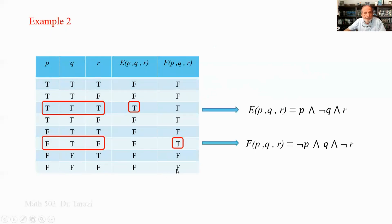Here is another example. I have a logical function F of P, Q, and R whose values are all false except for one true. F can be expressed as NOT P AND Q AND NOT R. This is true when NOT P is true meaning P is false, Q is true, and NOT R is true meaning R is false.